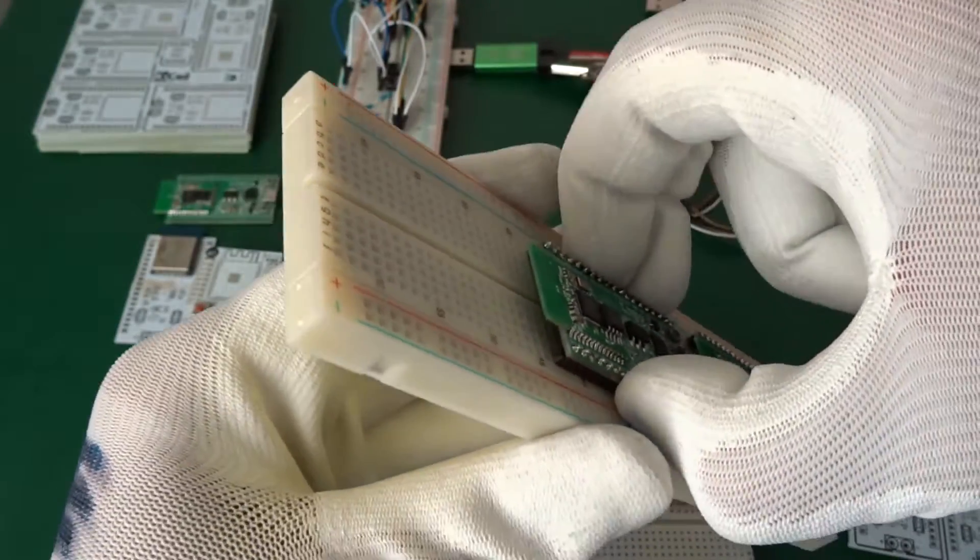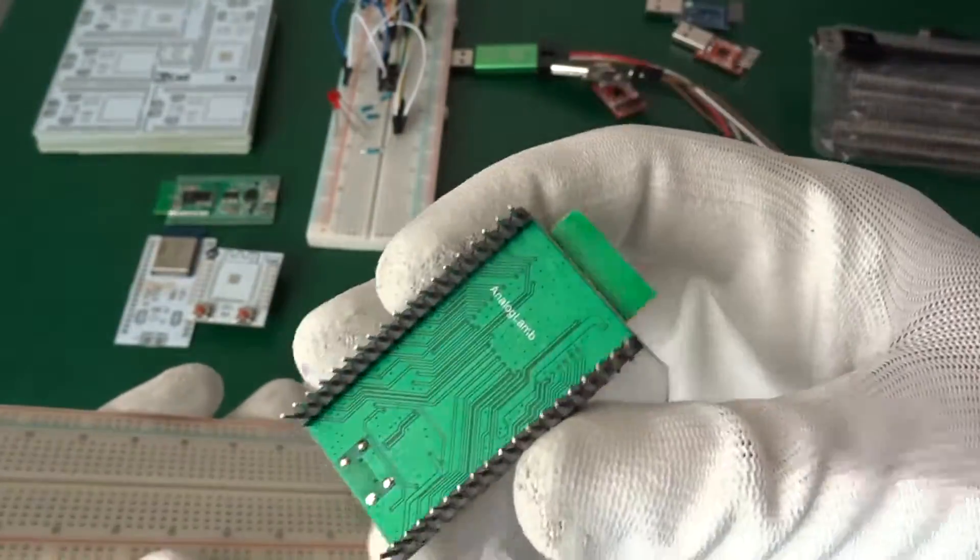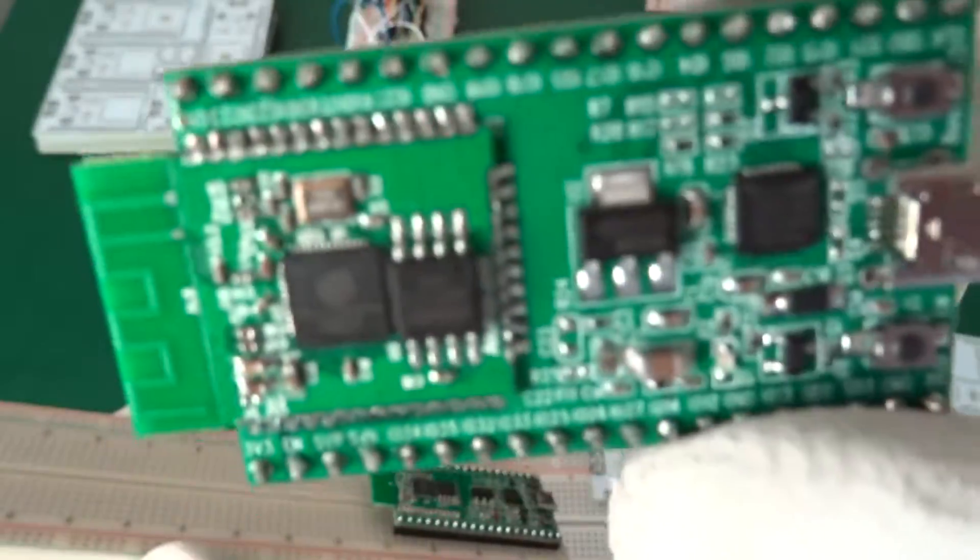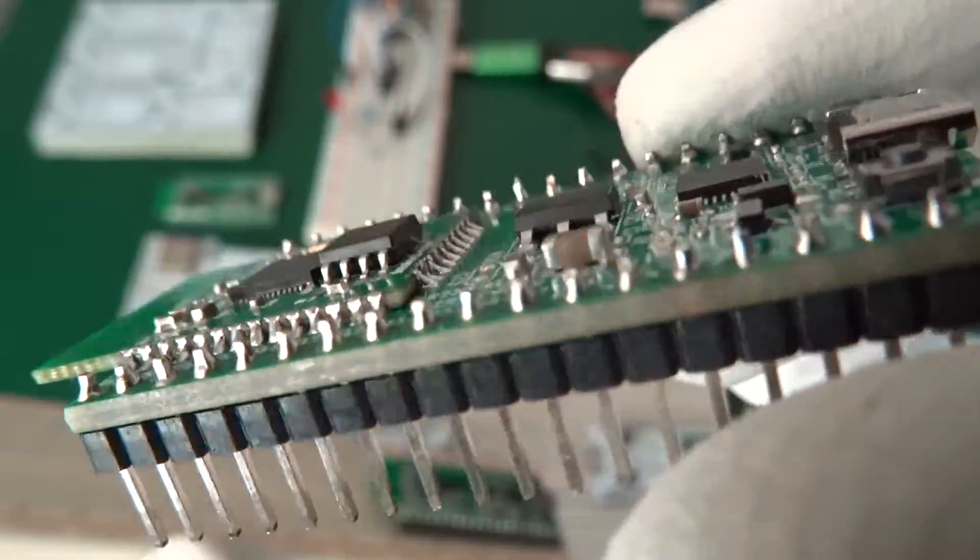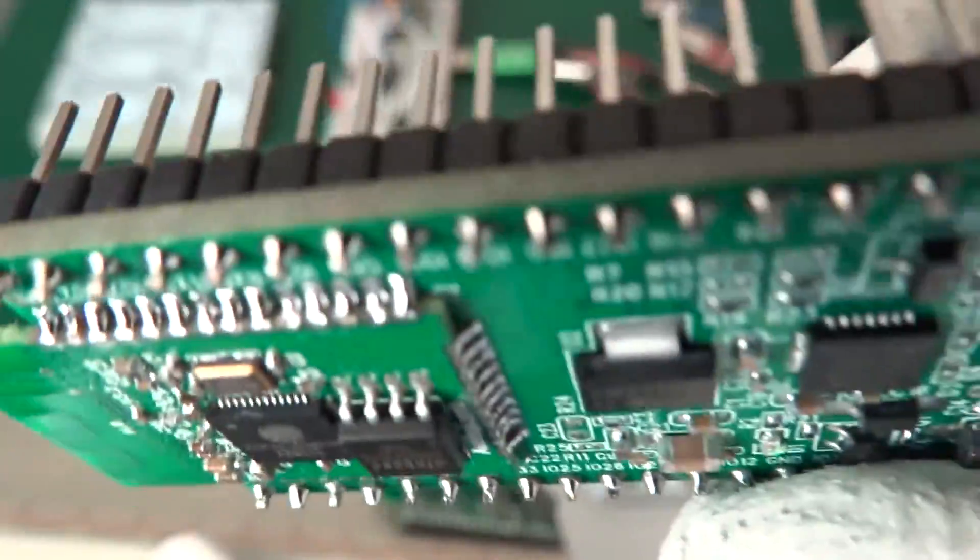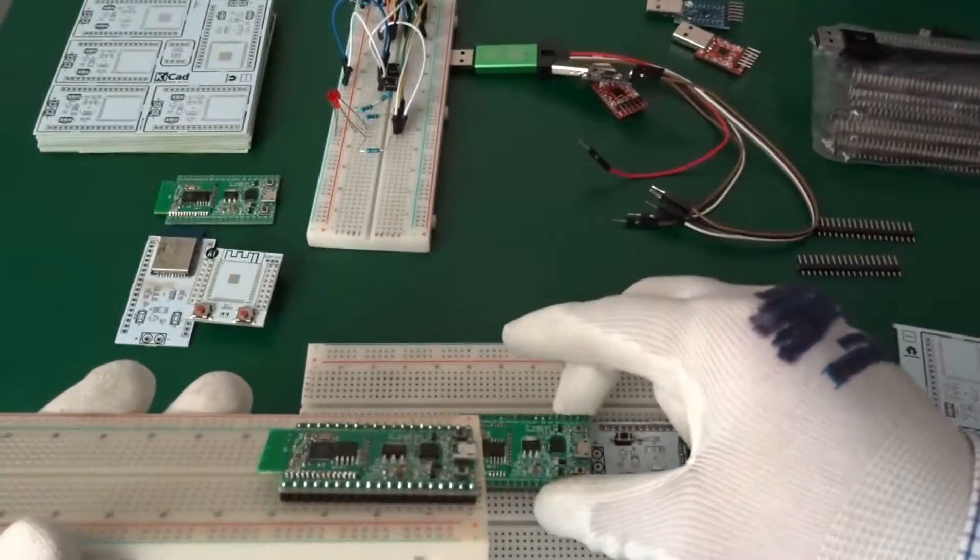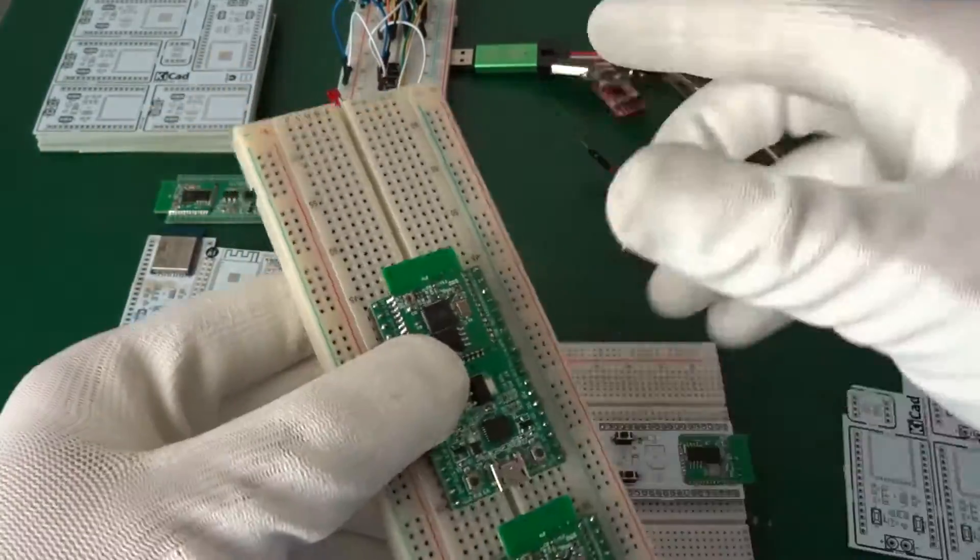And in the single breadboard we have the same problems like our own adapter. The module is so wide that there's only one row of pin connections to plug in our jumper cables or Dupont wires.